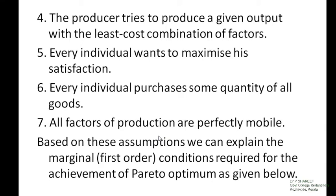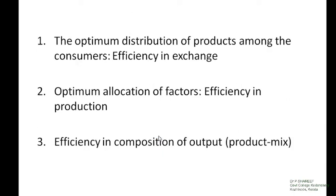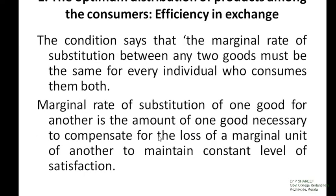Based on these assumptions, we can explain the marginal conditions, which are the first order conditions required for the attainment of Pareto optimum. The three marginal conditions developed by Lerner and Hicks are: number 1, the optimum distribution of products among the consumers, that is, efficiency in exchange; number 2, optimum allocation of factors, that is, efficiency in production; number 3, efficiency in the composition of output, that is, efficiency in the product mix.